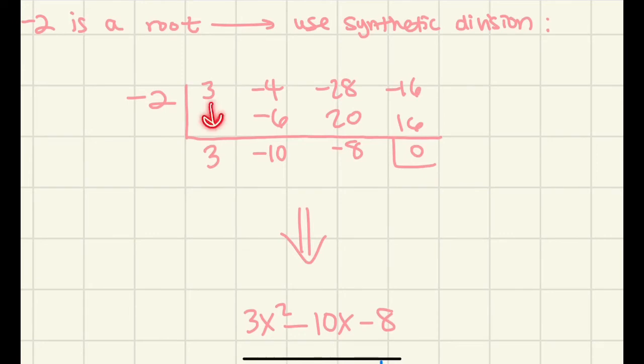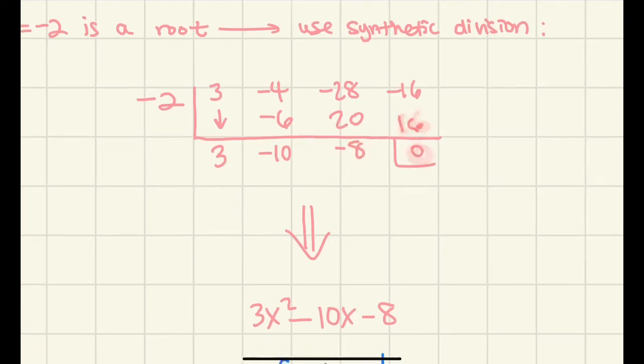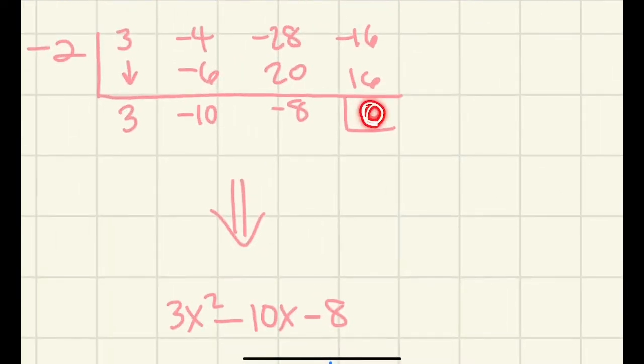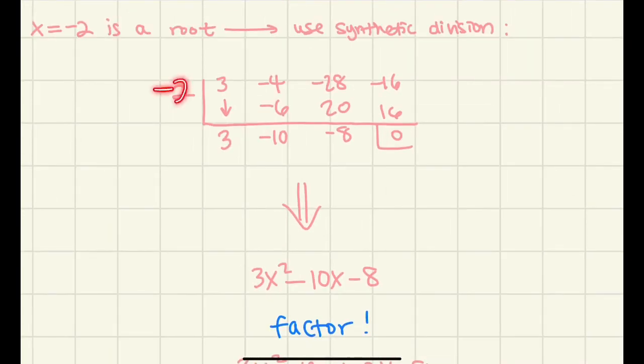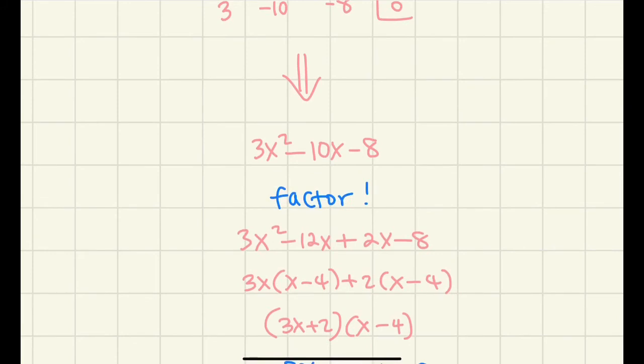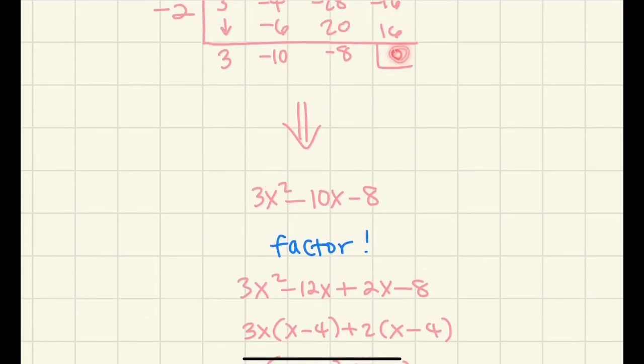So what you would do is you bring this down, 3, and then you multiply these two, get negative 6, and then you add these two, so it's negative 10, multiply, you get 20, and then you add negative 8, and then you just keep going, and then you get 0 at the end. So you are always going to get 0 at the end, because as we stated before, negative 2 is a factor, meaning that we would not get a remainder.